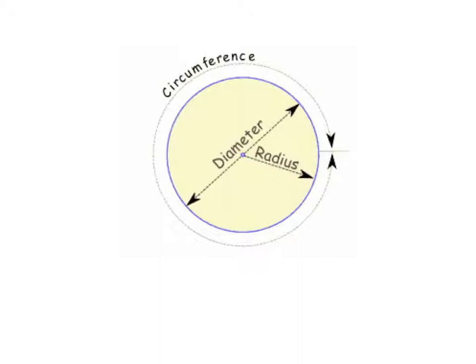The circumference is the perimeter, or the outside distance of the circle.